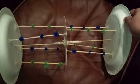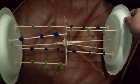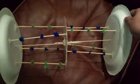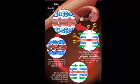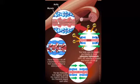This causes a power stroke, then the cross bridge is released when ATP is reattached. In rigor mortis, the membrane of the muscle cell becomes more permeable to calcium ions.